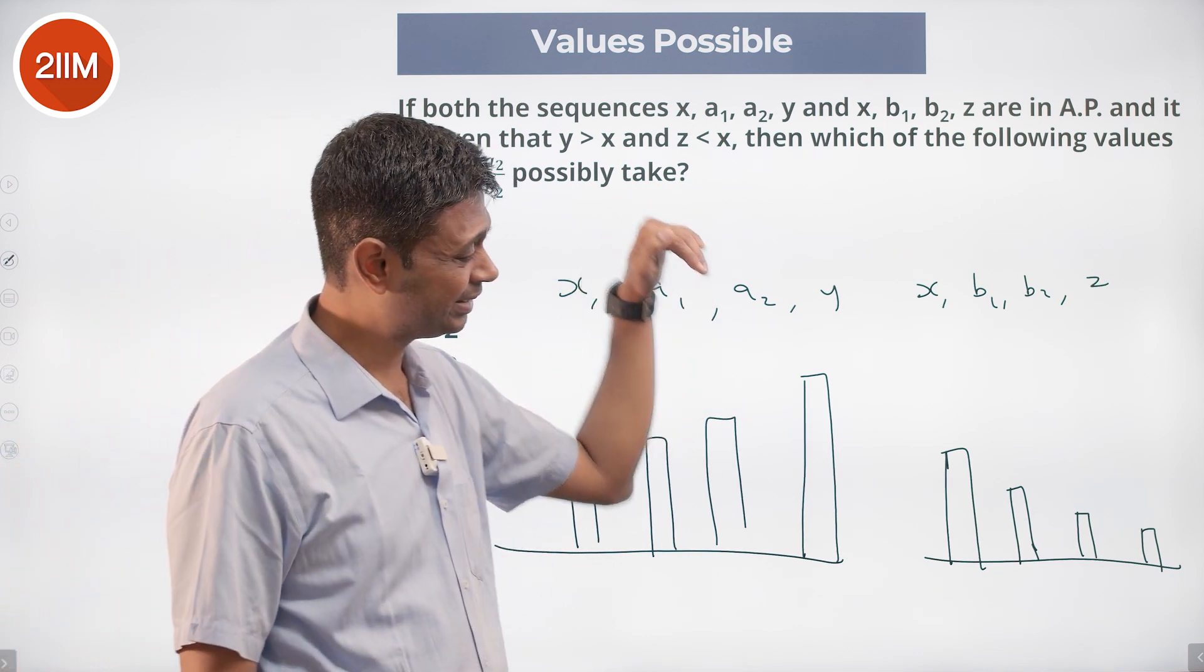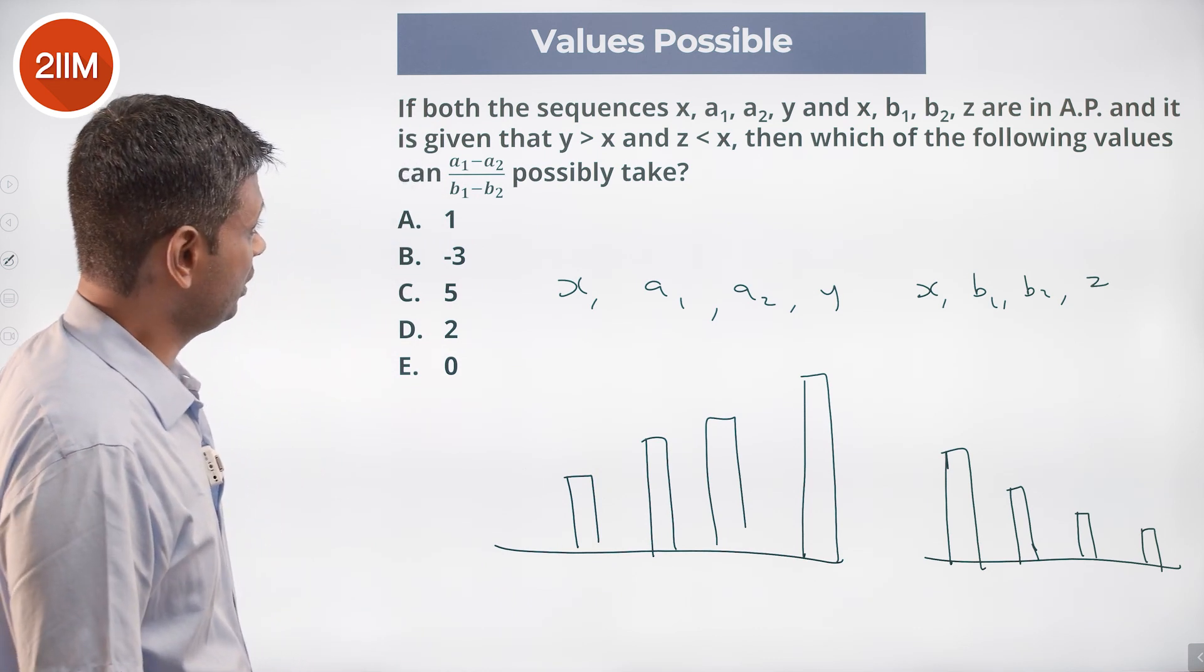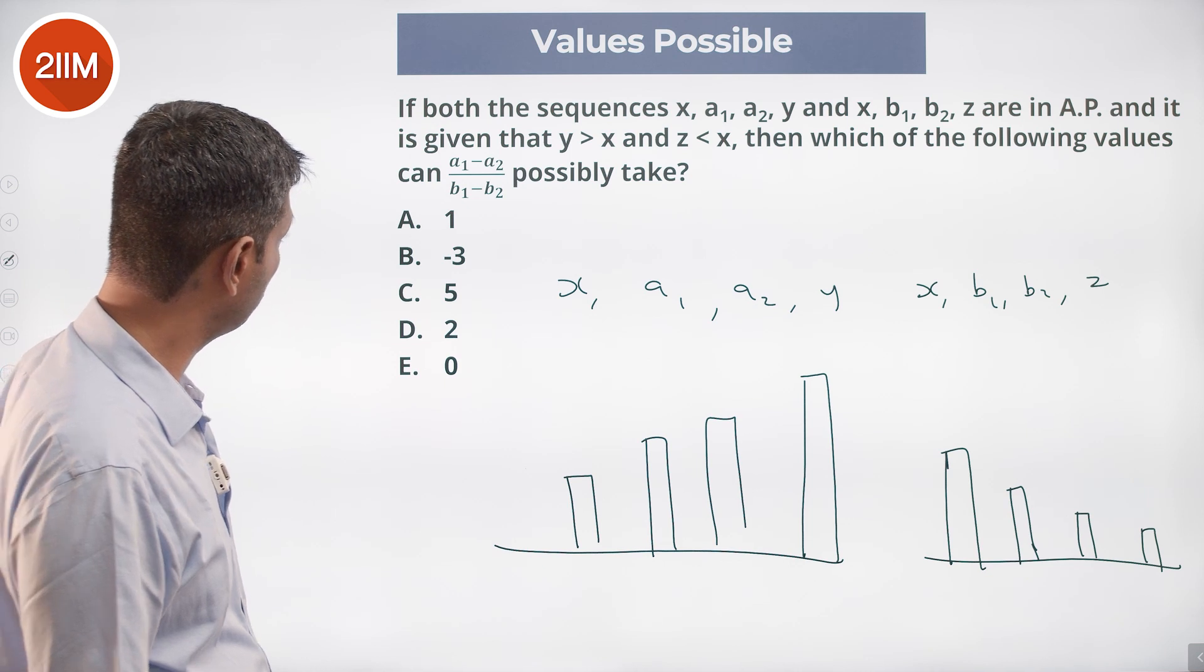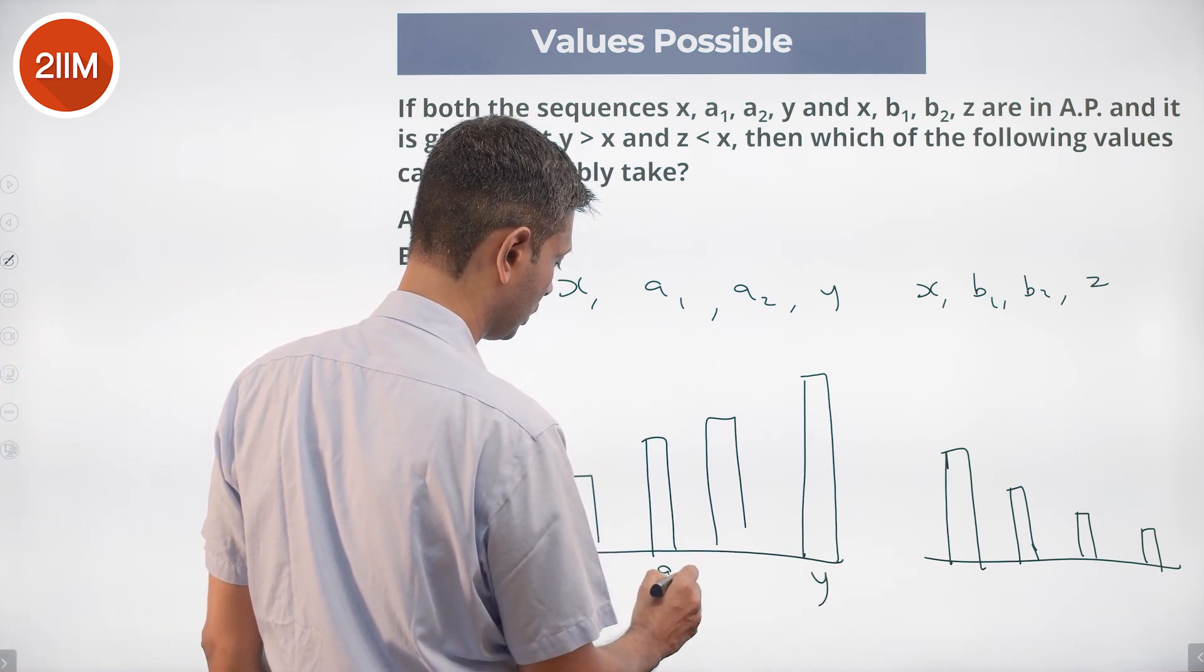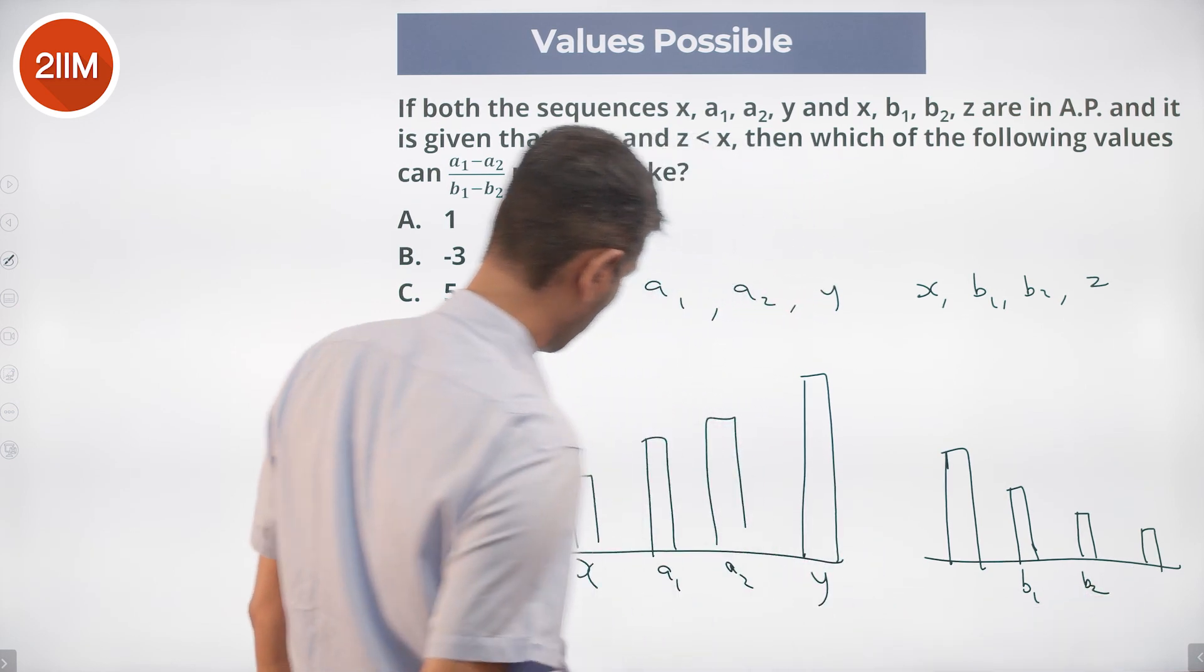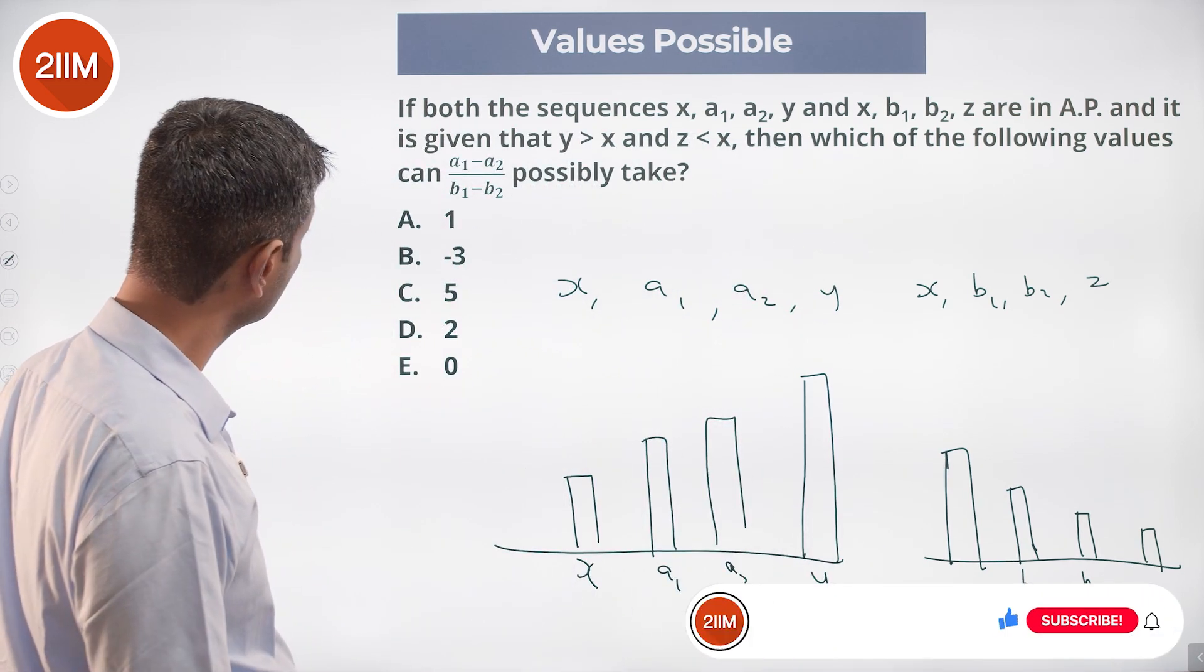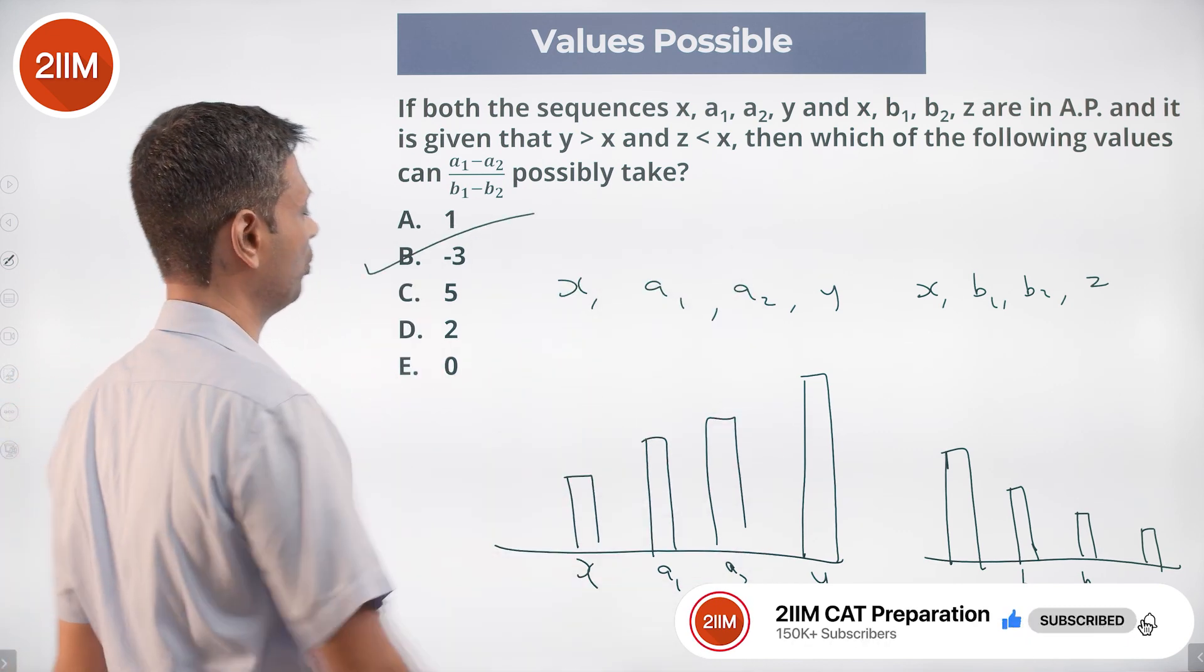Then which of the following values can a1 minus a2 by b1 minus b2 take? This is x, this is y. a1, a2. a1 minus a2 will be negative. b1 minus b2 will be positive. a1 minus a2 by b1 minus b2: negative by positive, opposite sign. It cannot be positive.